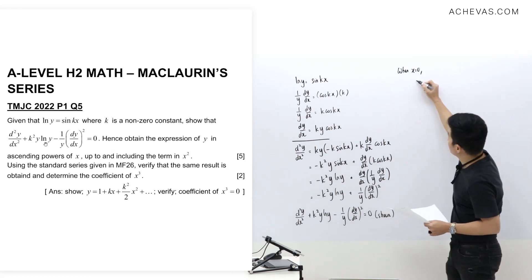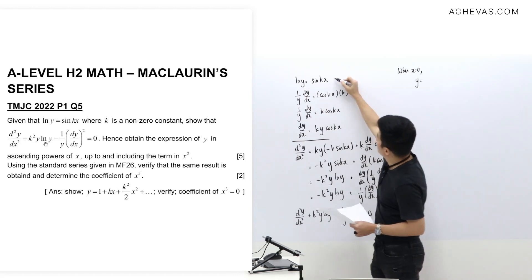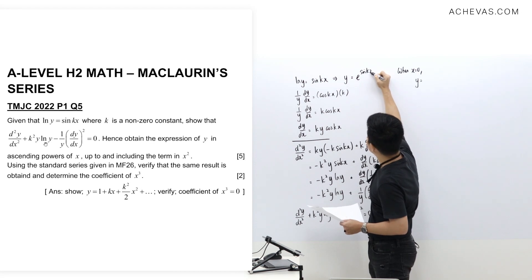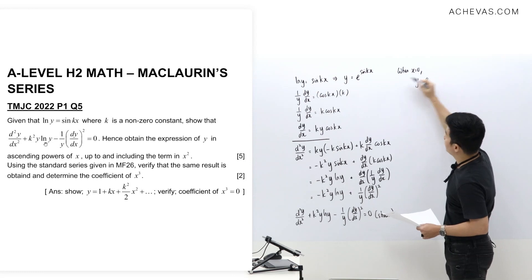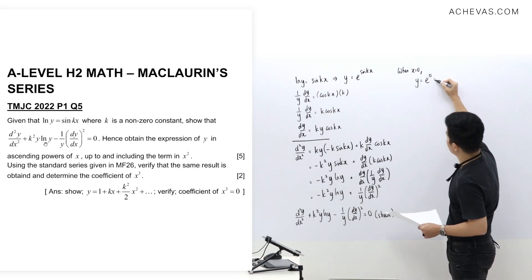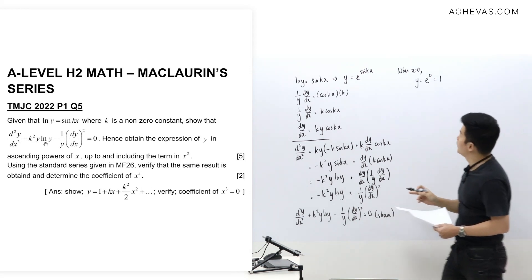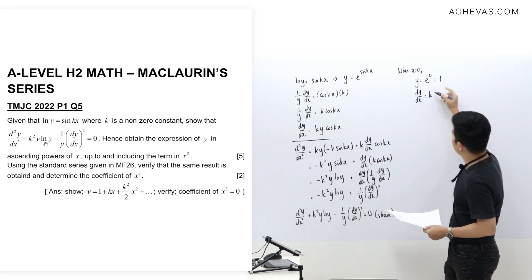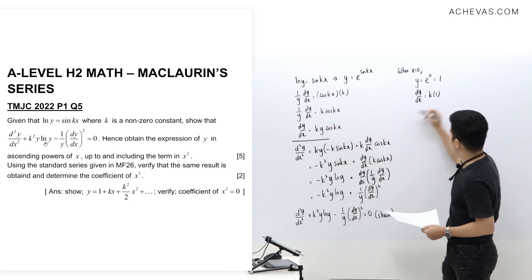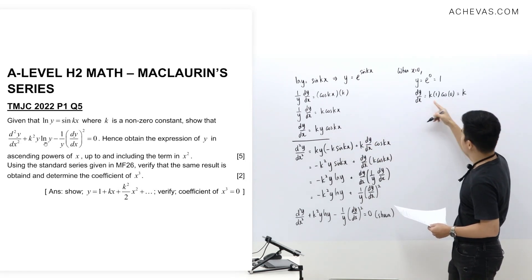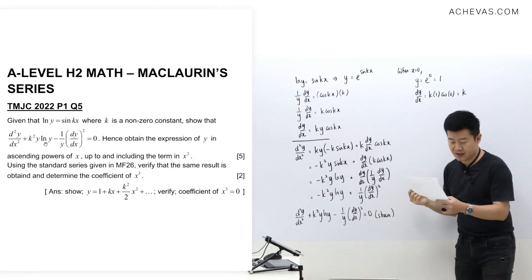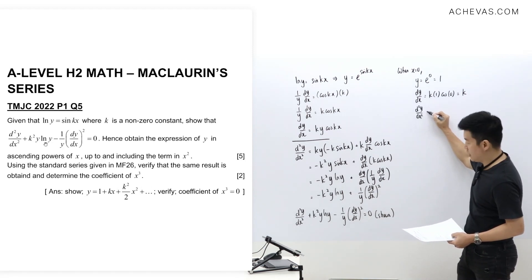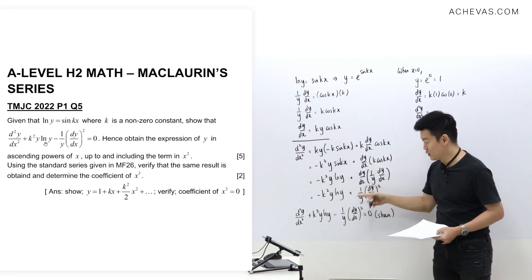Applying Maclaurin's, we let x = 0. Since y = e^(sin kx), when x = 0, sin(0) = 0 so y = e⁰ = 1. For dy/dx = k·y·cos(kx), substituting x = 0 gives dy/dx = k·1·cos(0) = k·1·1 = k. For d²y/dx², we use the proved equation. Substituting: d²y/dx² = −k²·(1)·ln(1) + (1/1)·k² = 0 + k² = k².